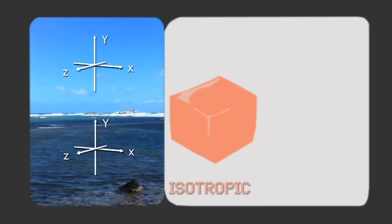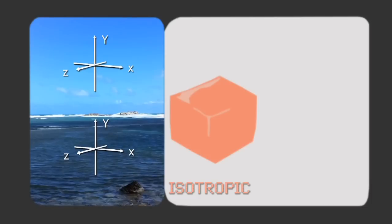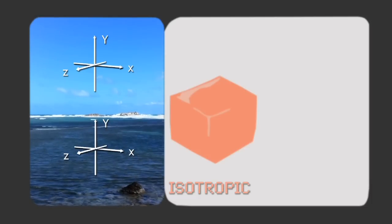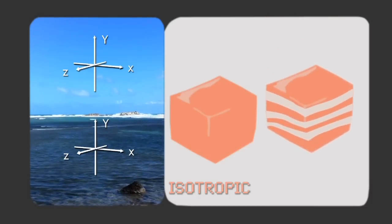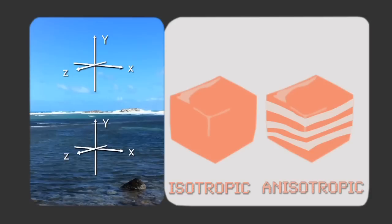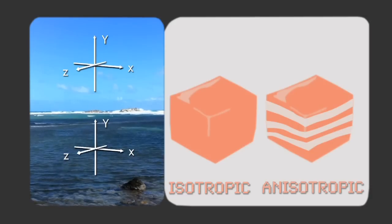A cube of jello is isotropic because its interior is uniform in all directions. On the other hand, jello that is layered is anisotropic because it has strong and weak layers.